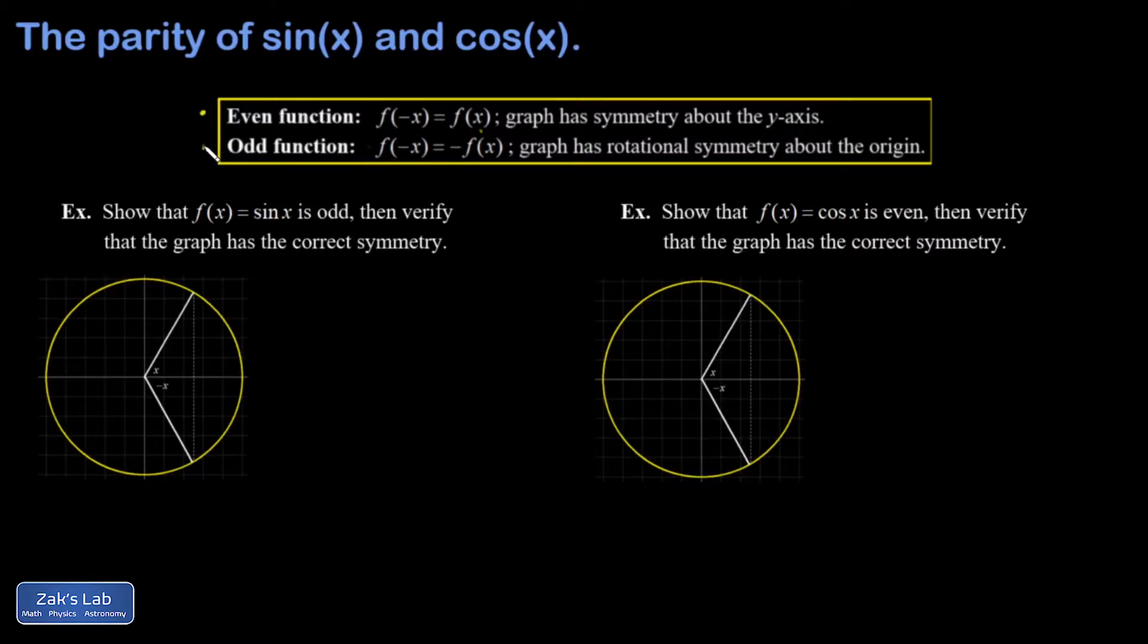An odd function has the algebraic property that f(-x) = -f(x), and the graph will have rotational symmetry about the origin. If you spin the graph by 180 degrees about the origin, you get a copy of the original graph.